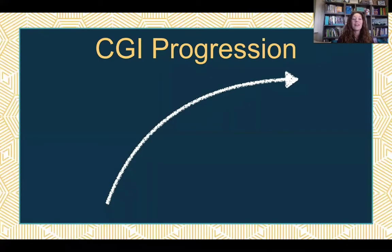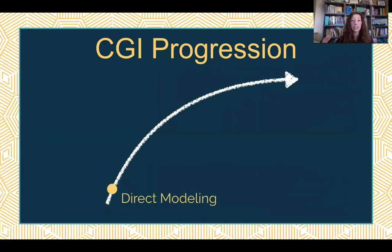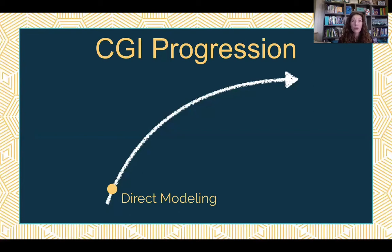The other thing I want to talk about is the CGI progression — cognitively guided instruction. The research showed us that kids will go through four stages as they start to develop strategies for addition, subtraction, multiplication, and division. These stages show up when kids are learning all four operations. The first way is that kids will directly model what the problem says. So if the problem is 'Sierra has four dollars, she earns three more dollars, how much money does she have now?' they would count out four, then count out three more.